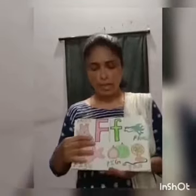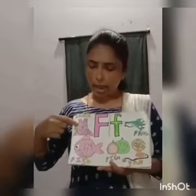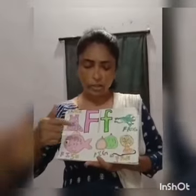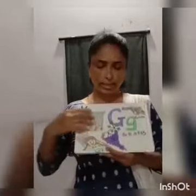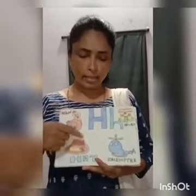After E, what do we have, children? We have capital F. F for frog, fish, fig, fan and frog. After F, what do we have? We have capital G. This is H — H for hen, hat, helicopter and house.